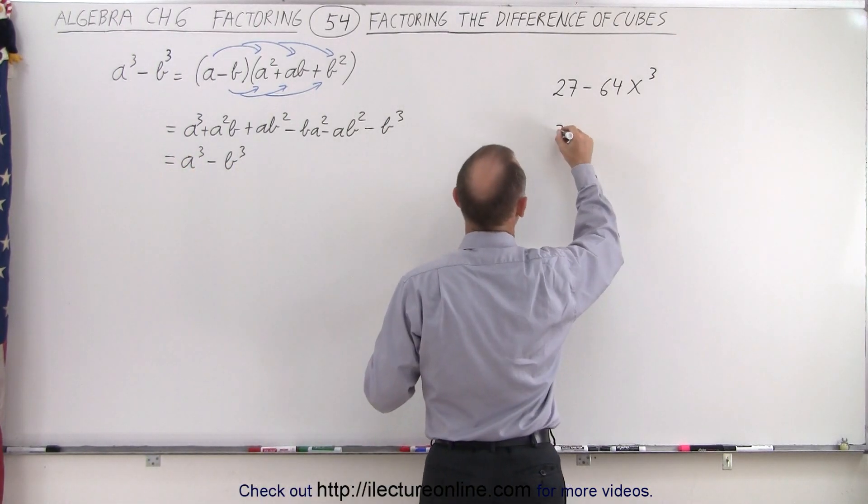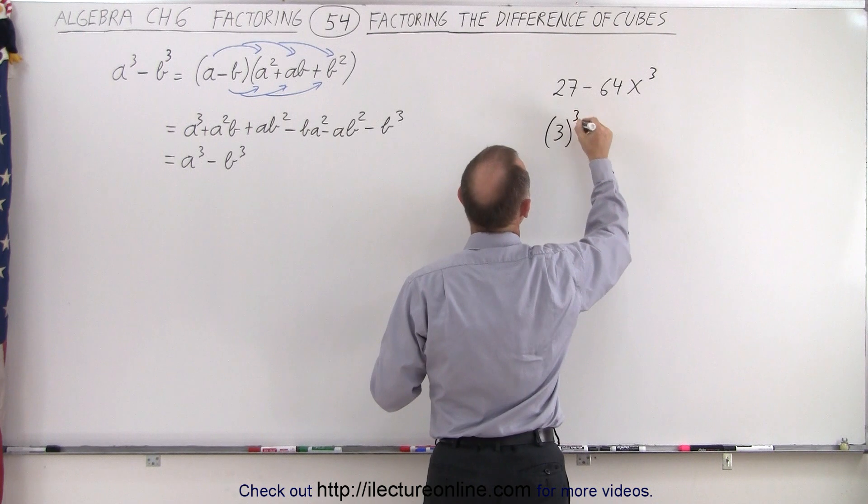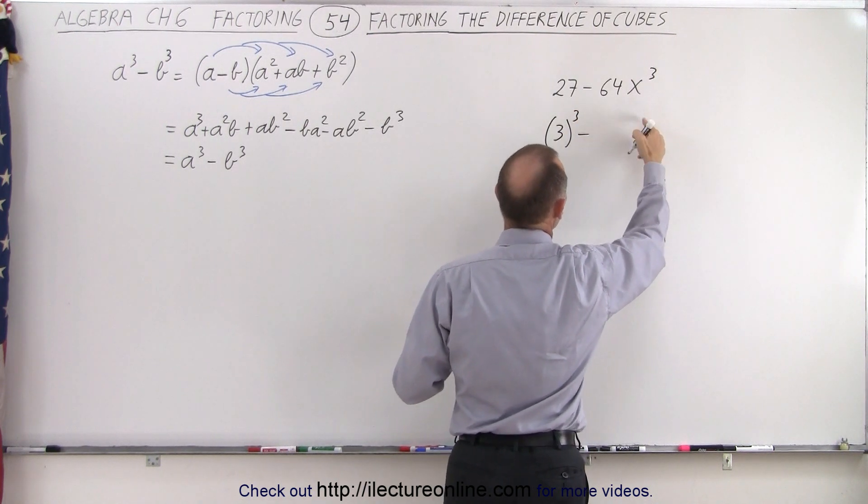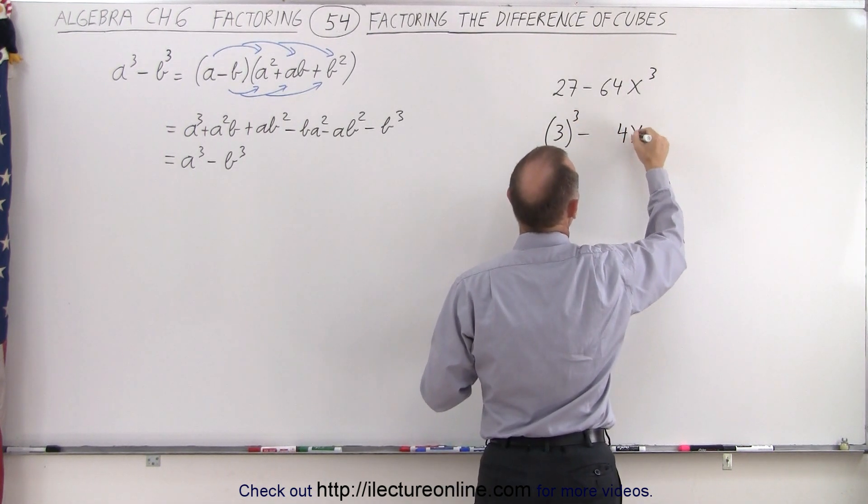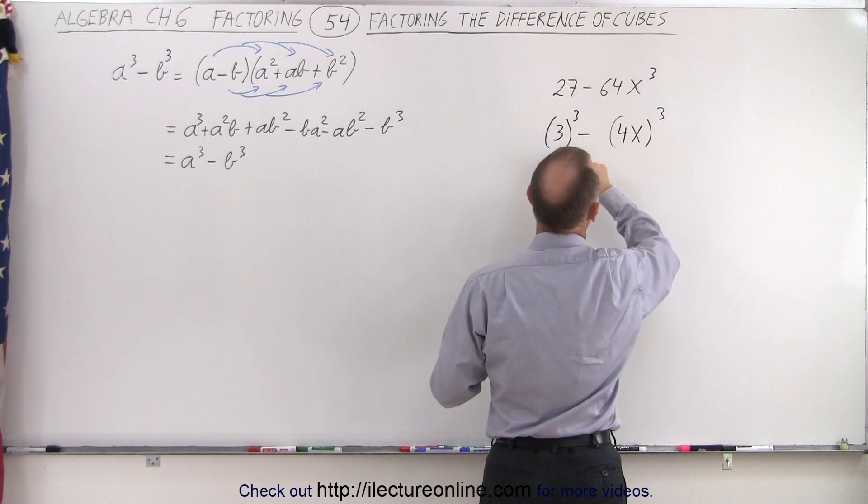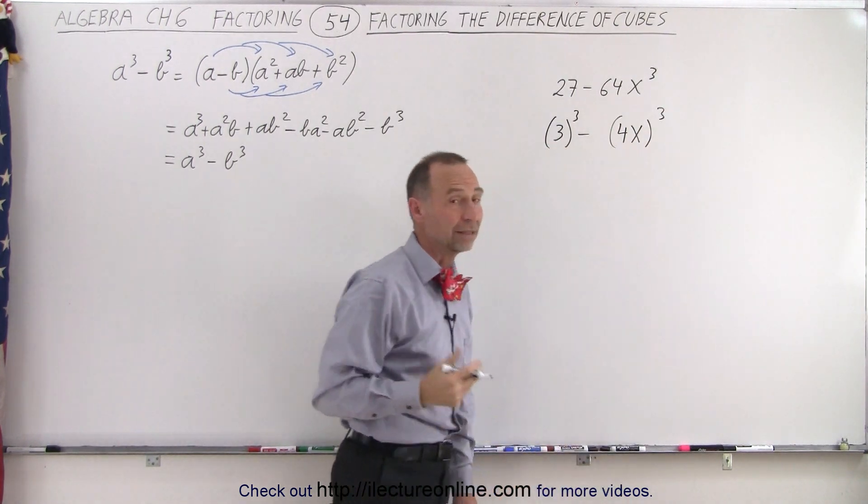27 can be written as 3 quantity cubed, and 64x cubed can be written as 4x quantity cubed. And now we can see that this is clearly the difference of cubes.